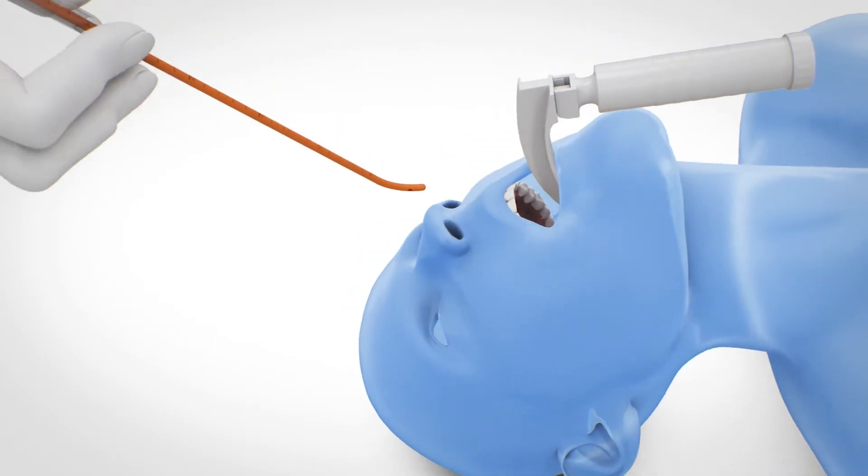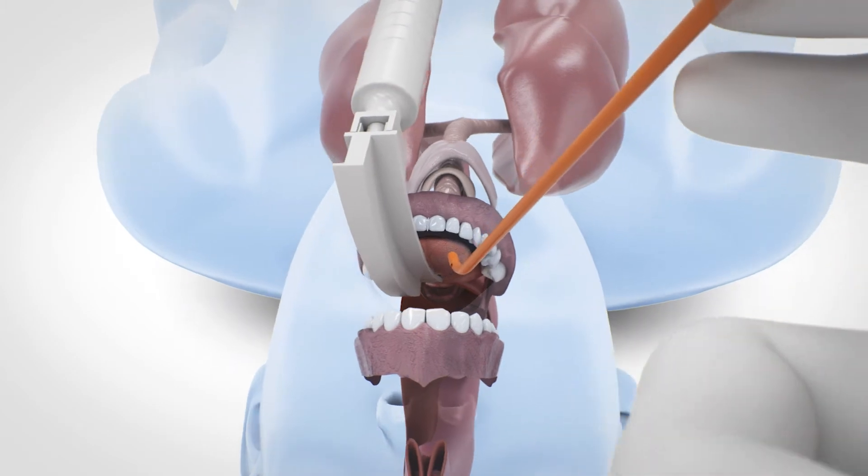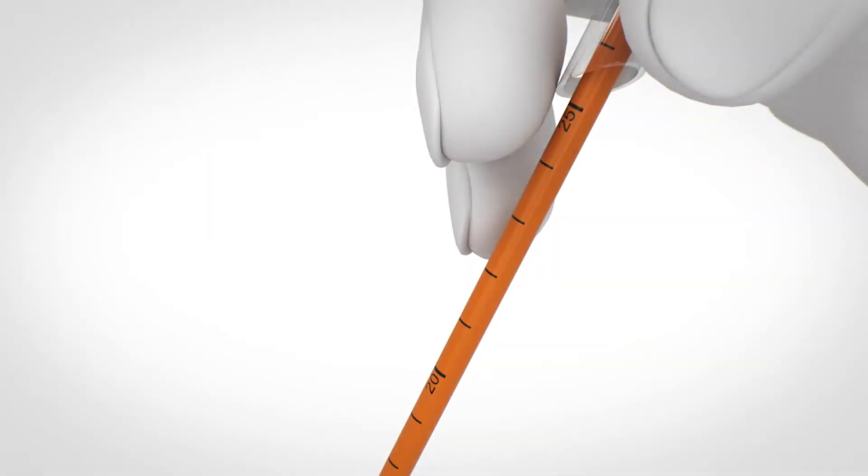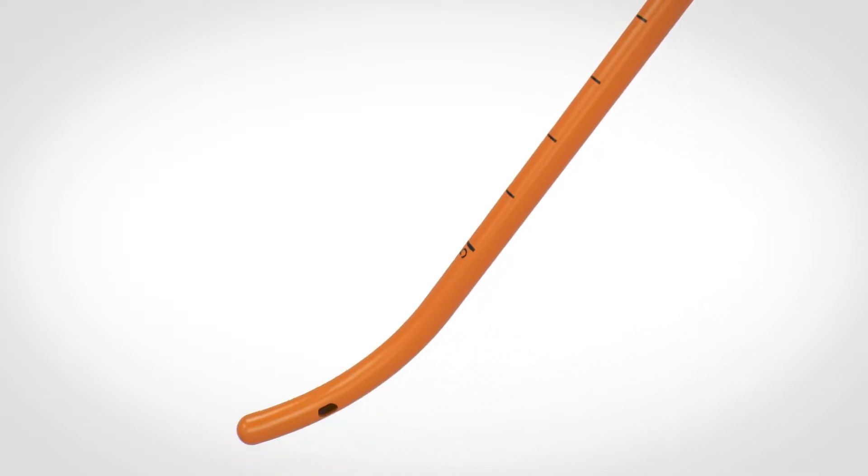Via laryngoscopy, insert the EyeBougie from the side of the mouth with the angled tip first. For clear orientation, make sure that the centimeter markings face up, which provides better control of the angled tip in the vertical plane.